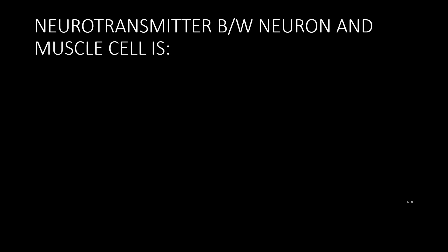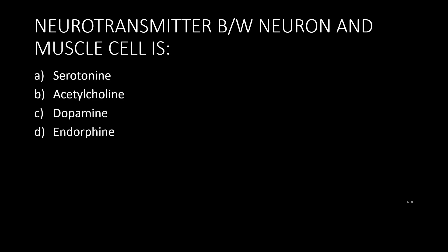The neurotransmitter between a neuron and muscle cell is: options are serotonin, option B acetylcholine, option C dopamine, option D endorphin. The answer is acetylcholine.